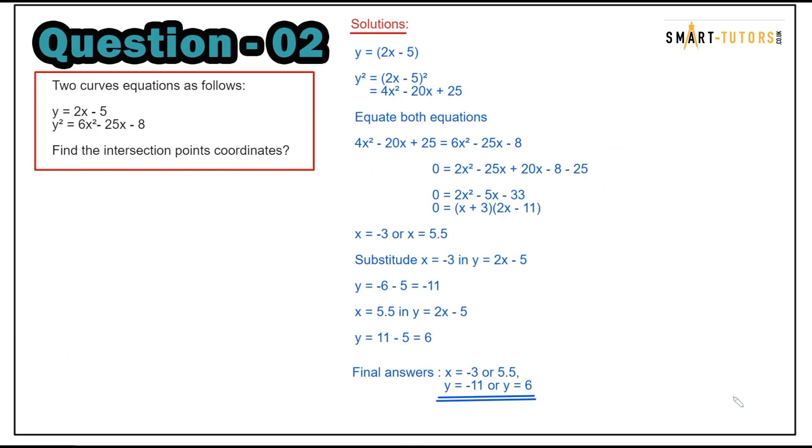Let's look at another question. Two curves equations are given: y equals 2x minus 5 is the linear equation, y squared equals 6x squared minus 25x minus 8 is the quadratic equation. Find the intersection points. To find the intersection point, take the linear equation and square both sides since the other equation has y squared.